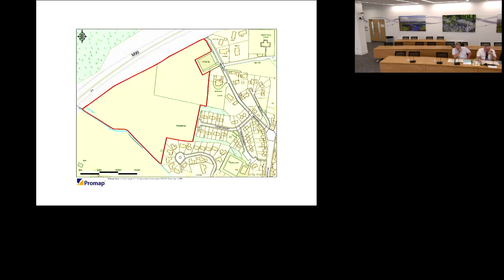Now we move on to the second application: Section 42 of the Town and Country Planning Scotland Act 1997, to develop land without complying with conditions one and two of planning permission already in place. I'll open this up to Mr Niven to introduce the paper.